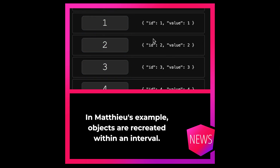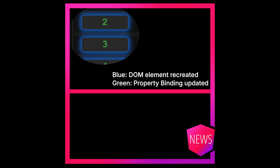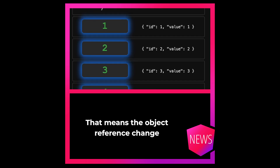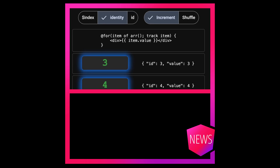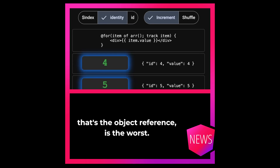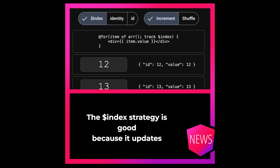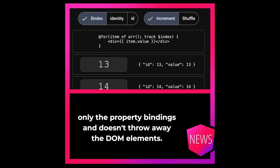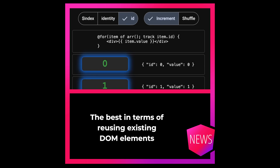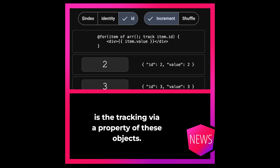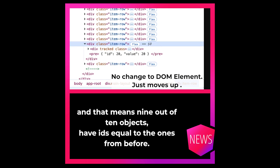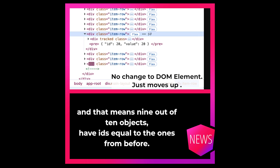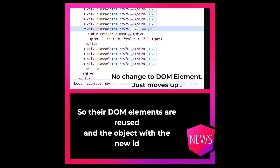In Mathieu's example, objects are recreated within an interval, meaning their object reference changes with every cycle. It's also the reason why the track strategy by identity — that's the object reference — is the worst. The $index strategy is good because it updates only the property bindings and doesn't throw away the DOM elements. The best, in terms of reusing existing DOM elements, is the tracking via a property of these objects. This is because he is incrementing the IDs with every run, and that means 9 out of 10 objects have IDs equal to the ones from before.